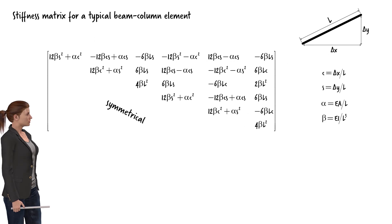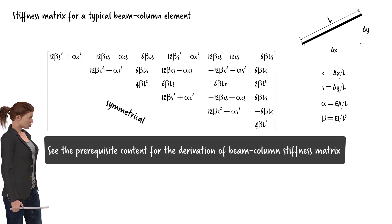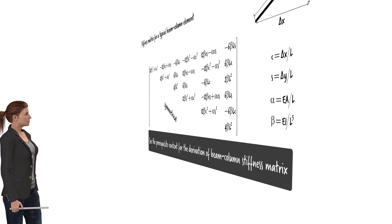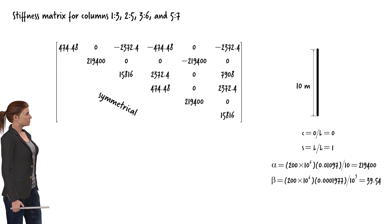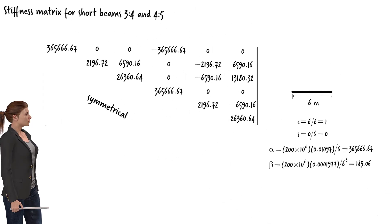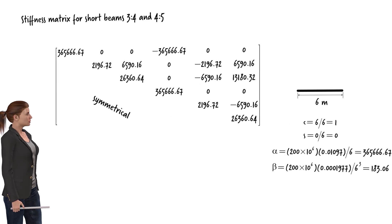Here is the general form of the stiffness matrix for a typical beam-column element. See our previous lectures on the displacement method for the derivation of this matrix. For the columns, the stiffness matrix becomes as shown. The matrix for the short beams can be written as shown, and for the long beam, we can write the following stiffness matrix.